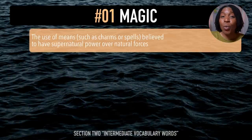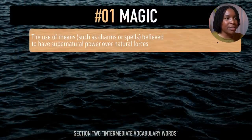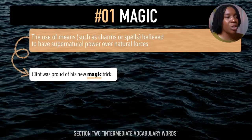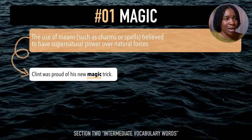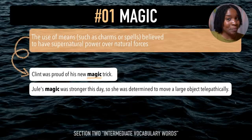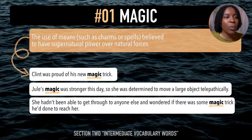In section two, we're looking at intermediate vocabulary words using the 'juh' sound. The first word is 'magic'. After me — magic. Magic is the use of means such as charms or spells believed to have supernatural power over natural forces. Example sentences: Clint was proud of his new magic trick. Jewel's magic was stronger this day, so she was determined to move a large object telepathically. She wondered if there was some magic trick he'd done to reach her. Last time — magic.